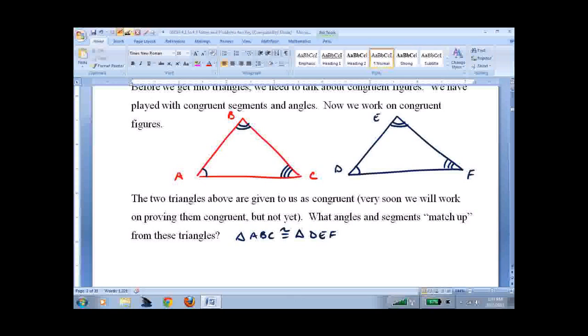And in a similar manner, AB and DE have to match up because they're the first two letters together. BC and EF match up. AC and DF match up.